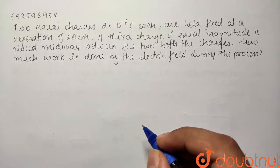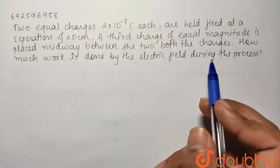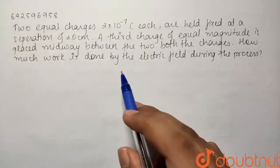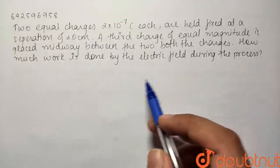A third charge of equal magnitude is placed midway between the two charges. How much work is done by the electric field during the process?